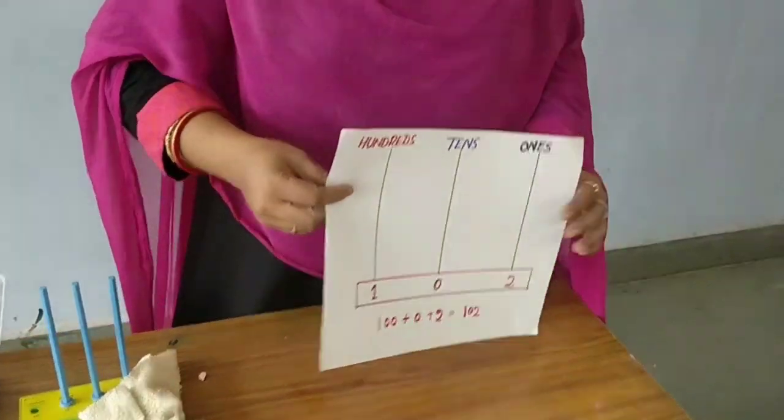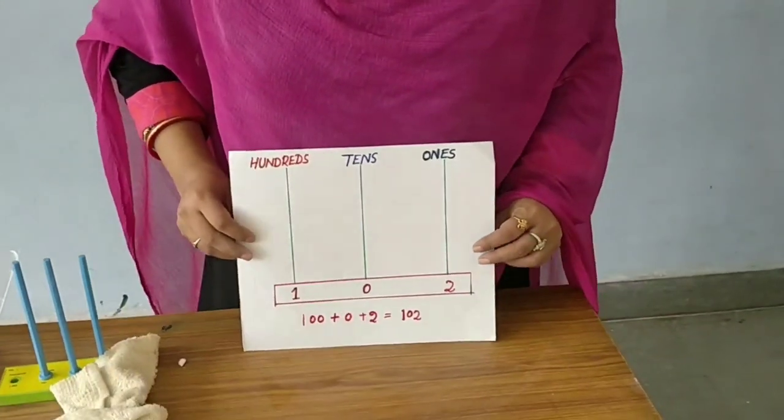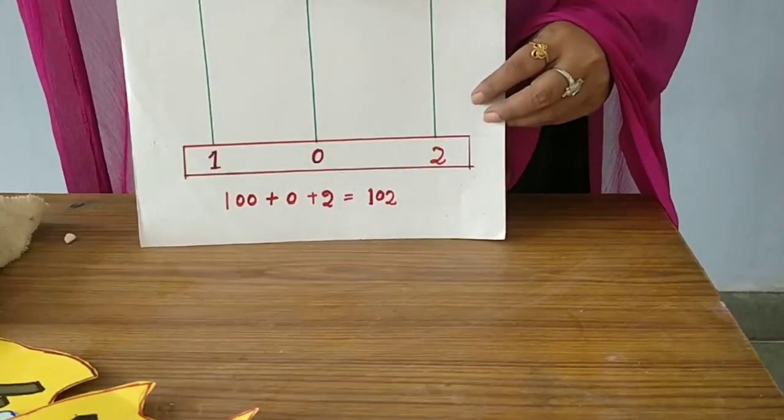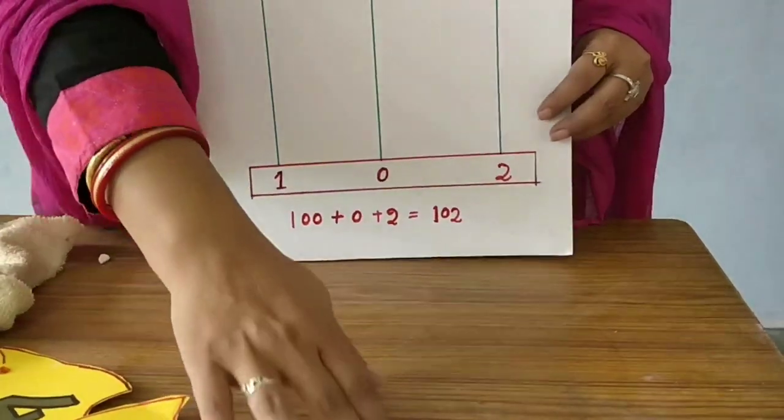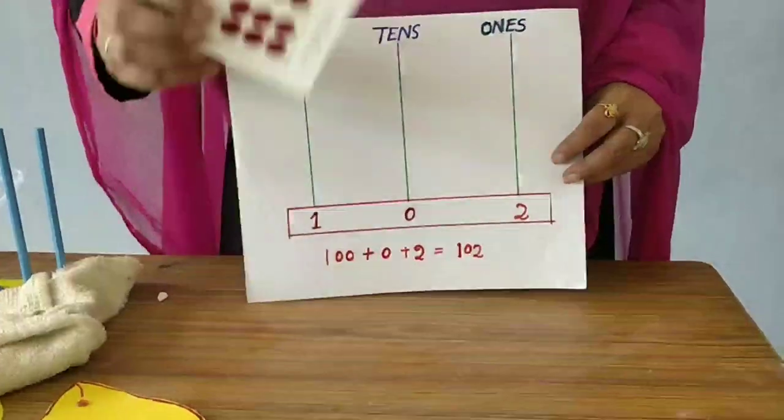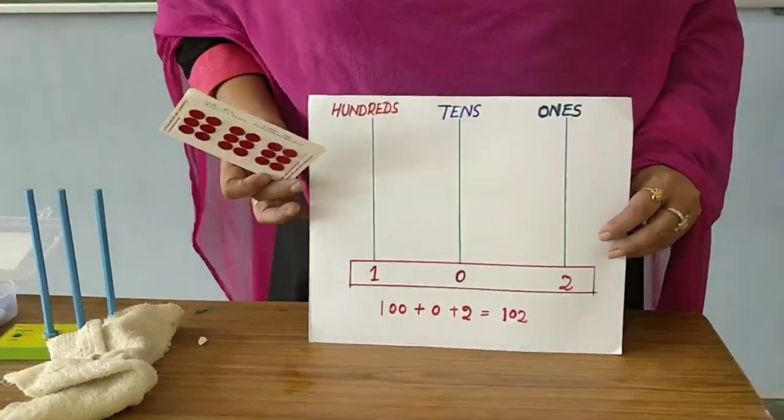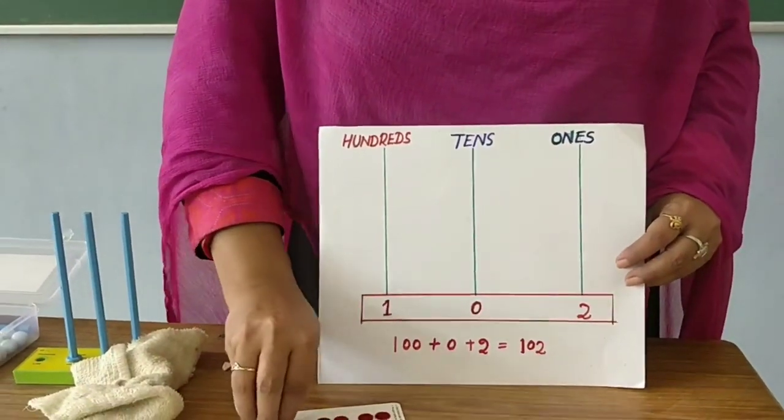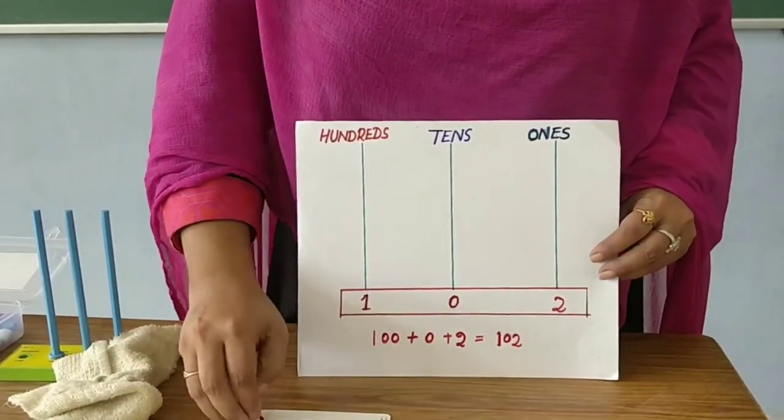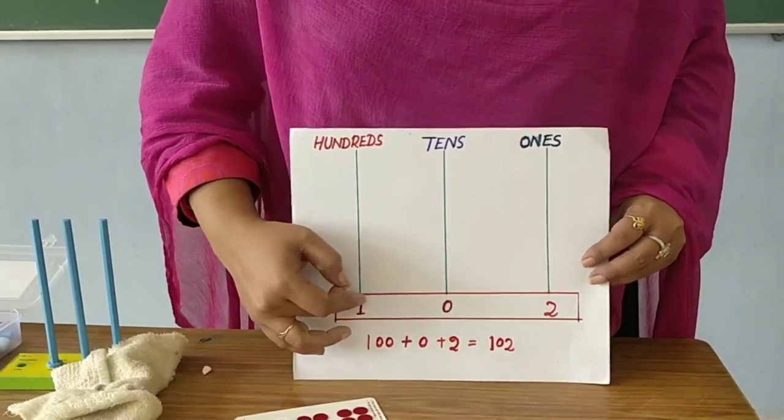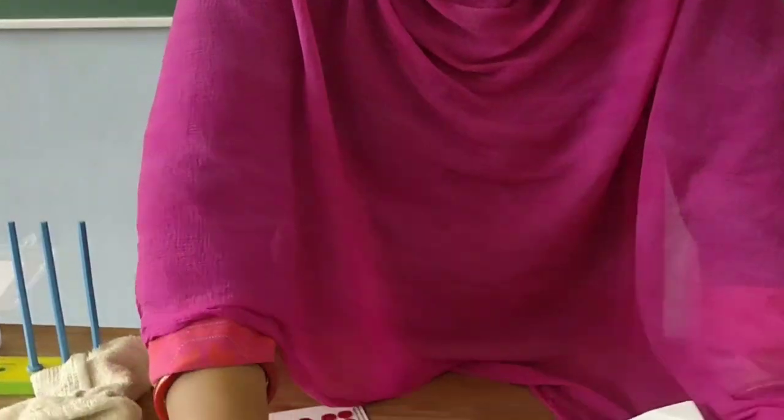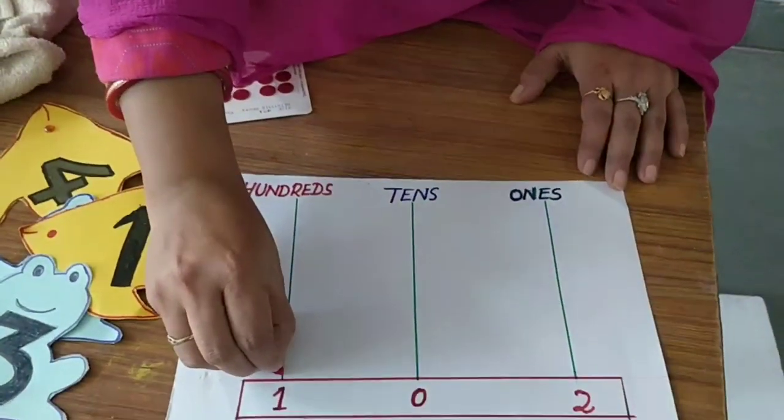See, I have drawn this line. Here is the hundreds place. This is the tens place. This is the ones place. So, how can you do this activity? Take some candies and 1 chart paper. Draw like this and stick 1, 1 candy there. I have written some number here also. 1 in hundreds place. So, we have to stick 1 candy here.